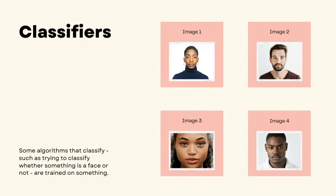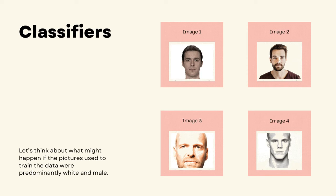Let's think about why. Some algorithms that classify — such as trying to classify whether something is a face or not — are trained on a dataset. With facial recognition, we use pictures of faces to train that algorithm to identify if a picture is a face or not. Typically, this algorithm will learn to associate certain facial features and shapes with faces. But let's think about what might happen if the pictures used to train the data were predominantly white and male. In that case, the algorithm, though not biased by nature, would learn a bias towards detecting faces that had features common among white males.